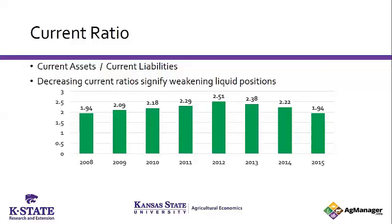For example, one current asset is cash — how much interest do you get on cash? Virtually nothing. Having a million dollars in your bank account in a non-interest-bearing account gives you a good liquidity position, but probably not the best management situation. Looking at where we've been since 2008, we went from 1.94 up to 2.51, and then from 2012 it turned, and now we're back to 1.94. So the current ratio is about where we were when we began this cycle.